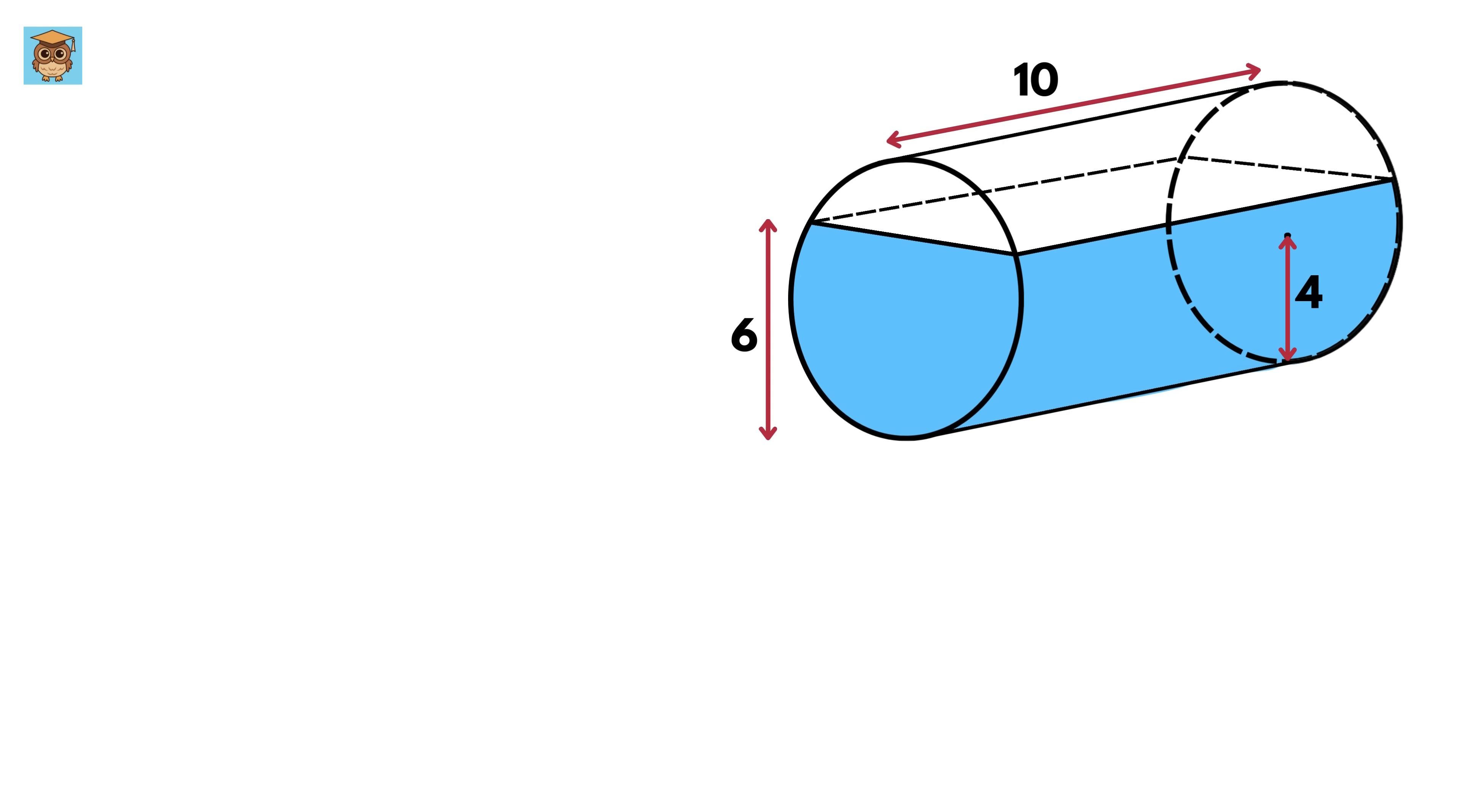Imagine you are looking at the cylinder from this side. Now we will slice the cylinder in half like this to look at this circular part or cross section. When the tank isn't fully filled the water creates a segment of the circle like this.